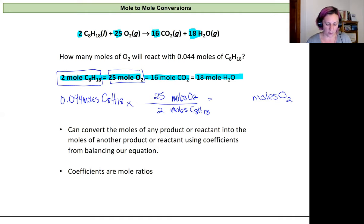Now I know that my moles of octane will cancel out and I'll be left with units of moles of oxygen. So this problem becomes 0.044 moles times 25 divided by 2, which gives me 0.55 moles of oxygen. And that's how you do a mole to mole conversion.